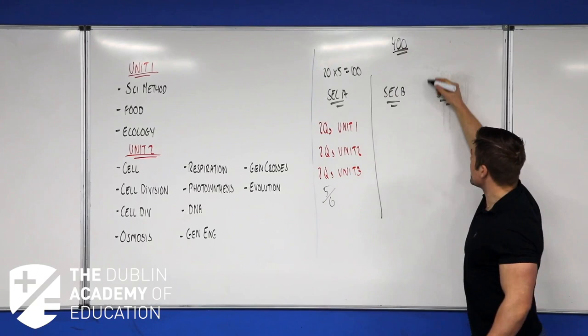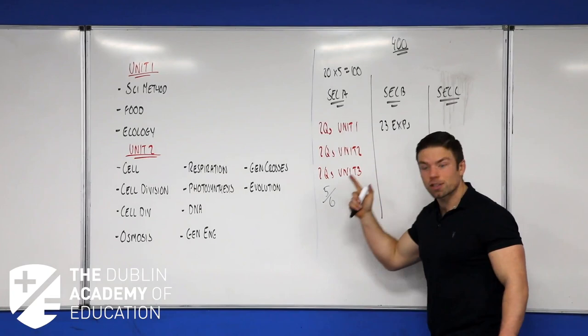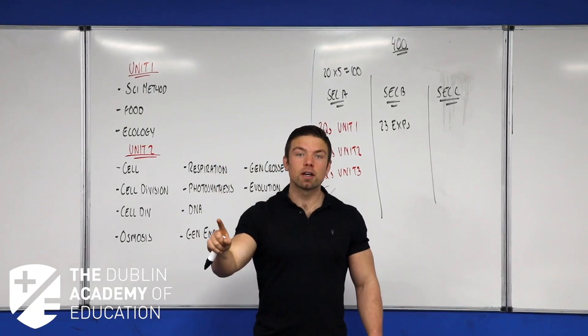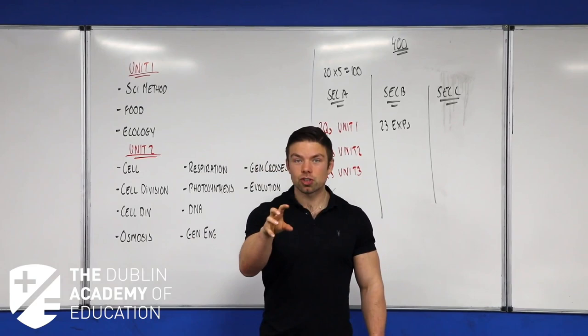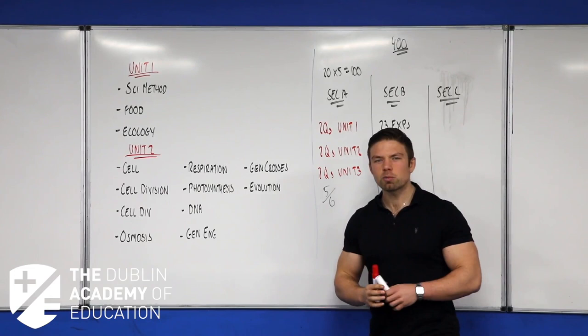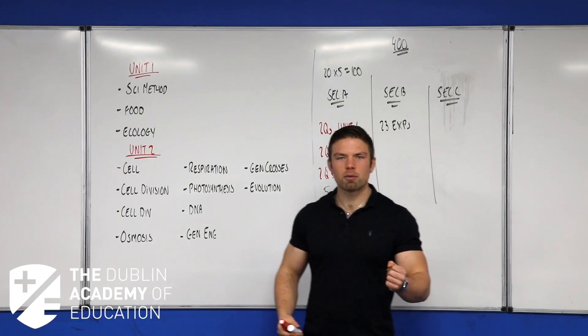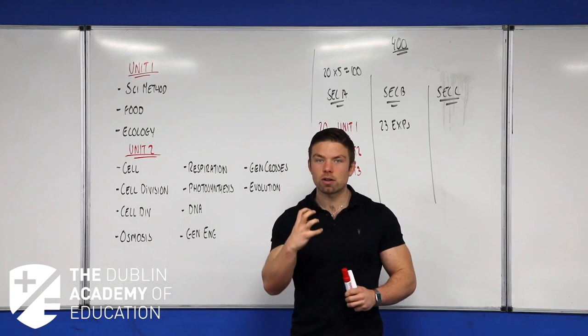Section B is the experiments. There are 23 experiments on the course — these are absolutely nothing like a write-up you would do for your teacher in school. You just have to generally understand the question; it never says 'write up this experiment.' The fascinating thing is that because there are 23, it's actually quite predictable what's going to come up. Four of them are food experiments, four are enzyme experiments that are all interconnected, so you can narrow this down even further.